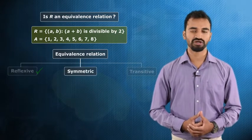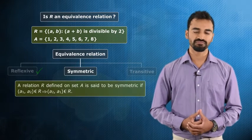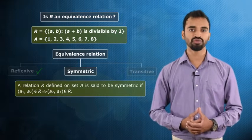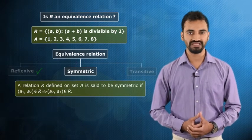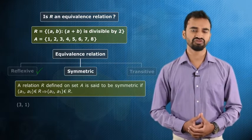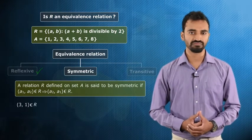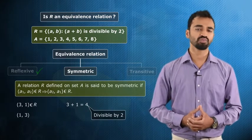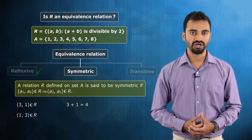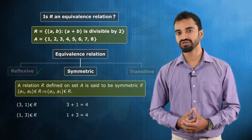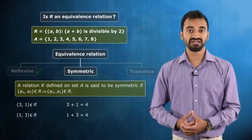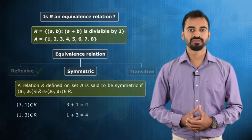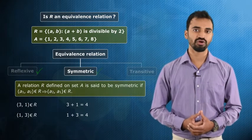Now let's check whether it is symmetric or not. For a relation to be symmetric, if (a1, a2) belongs to R, then (a2, a1) should also belong to R for every a1 and a2 belonging to set A. Let's take (3, 1): 3 plus 1 is equal to 4, which is divisible by 2, so (3, 1) belongs to R. Now, 1 plus 3 is also equal to 4, which is divisible by 2, and therefore (1, 3) also belongs to R.